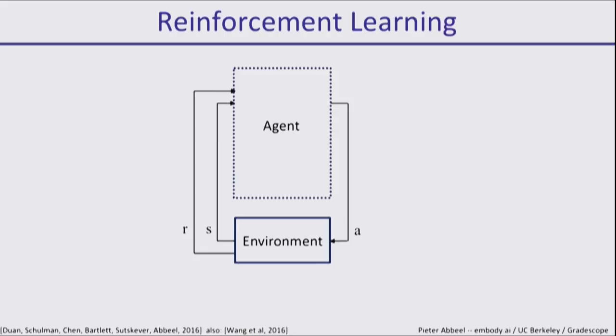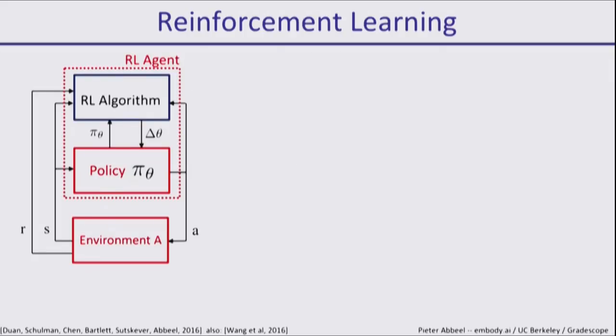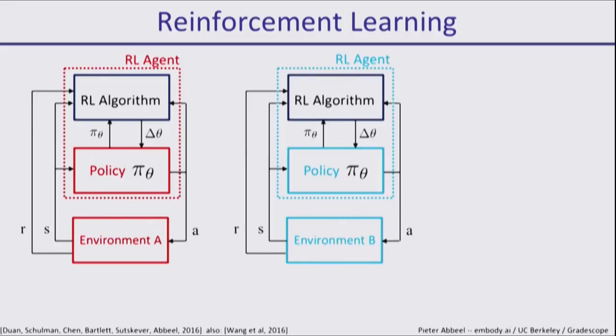Let's look at the reinforcement learning setting. We have an agent interacting with an environment, and hopefully it learns to do better over time. Underneath, usually we have a reinforcement learning algorithm that updates a policy based on past interactions. When you have a new environment, let's say environment A, your algorithm will learn a policy for that environment. When you have environment B, you can use the same code, the same RL algorithm, but the policy will be relearned to be tailored to environment B.